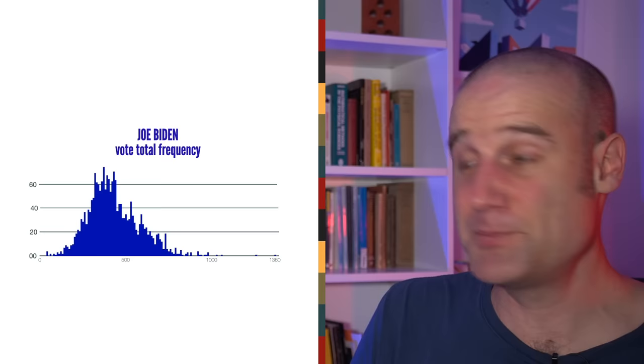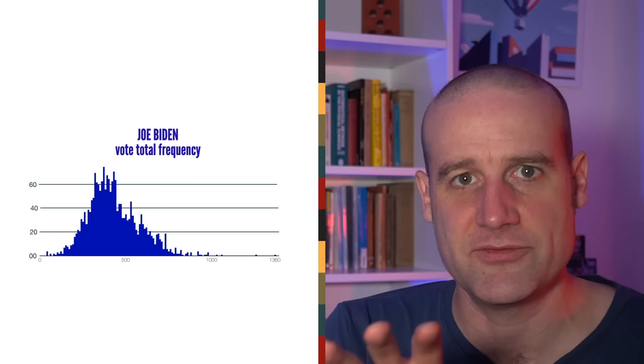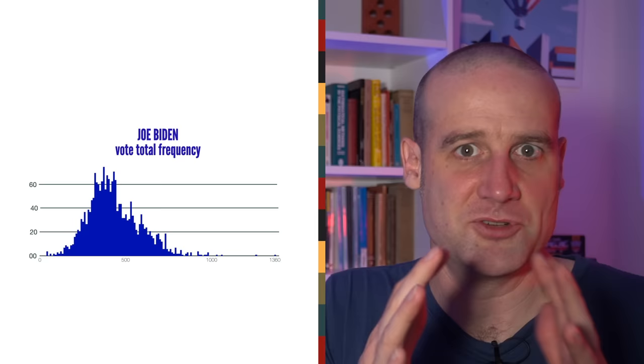While I had the data up, I also went through and categorised every single vote total that Biden got in 10 vote bins. I then plotted that distribution. And you can see it's basically a normal distribution and quite a tight one. That's because Biden was overwhelmingly the favourite in the Chicago area.